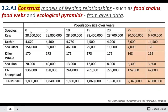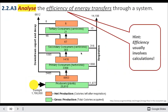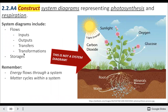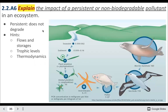Example exam-style questions include: construct food chains, food webs, and ecological pyramids from given data; explain the transfer and transformation of energy as it flows through ecosystems; analyze the efficiency of energy transfers; construct systems diagrams for photosynthesis and respiration, knowing oxygen, glucose, carbon dioxide, water and how they go in and come out; explain the laws of thermodynamics and how they relate to energy flows; and explain the impact of persistent non-biodegradable pollutants — how they accumulate in an organism and magnify as they are passed to each trophic level.